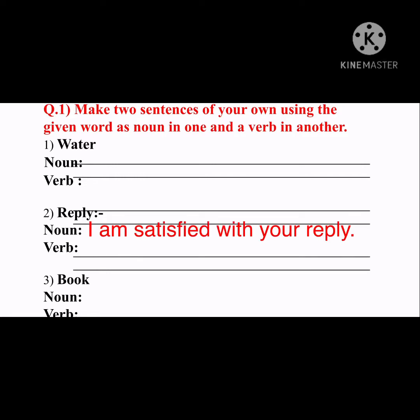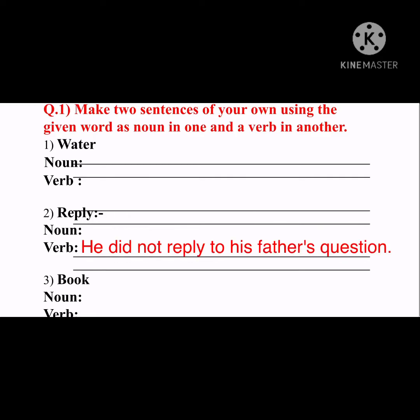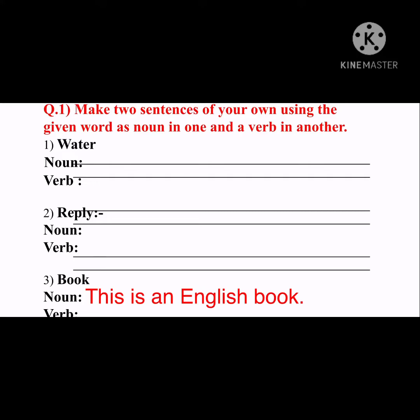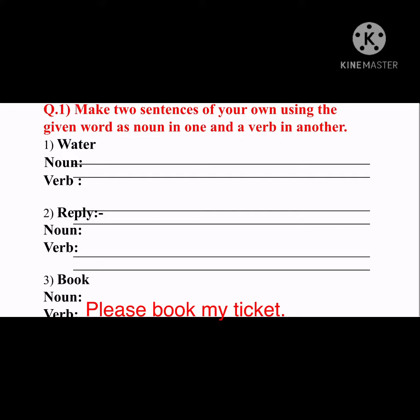Number two: 'reply.' Noun sentence: 'I'm satisfied with your reply.' Verb sentence: 'He did not reply to his father's question.' Note that 'did not' is your helping verb and 'reply' is your main verb, which comes after the subject. Number three: 'book.' Noun sentence: 'This is an English book.' Verb sentence: 'Please book my ticket.'